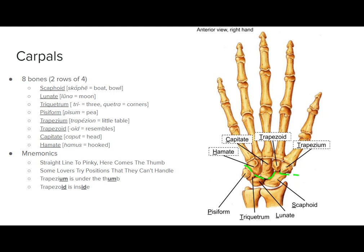There are a couple of mnemonics to remember this that are pretty good. The first one goes in a circle like this, where you start here at the scaphoid. So you start at the under the thumb and you go the scaphoid. You start there in a straight line to pinky. Then you go back. Here comes the thumb and you end up under the thumb.